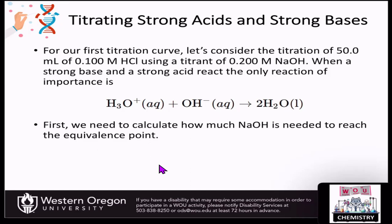In this first titration curve, let's consider the titration of 50 mL of 0.1 molar HCl using a titrant of 0.2 molar sodium hydroxide. Only the net ionic reaction is important here because the spectator ions floating around don't really contribute to the reaction — that's the only component we need to consider.